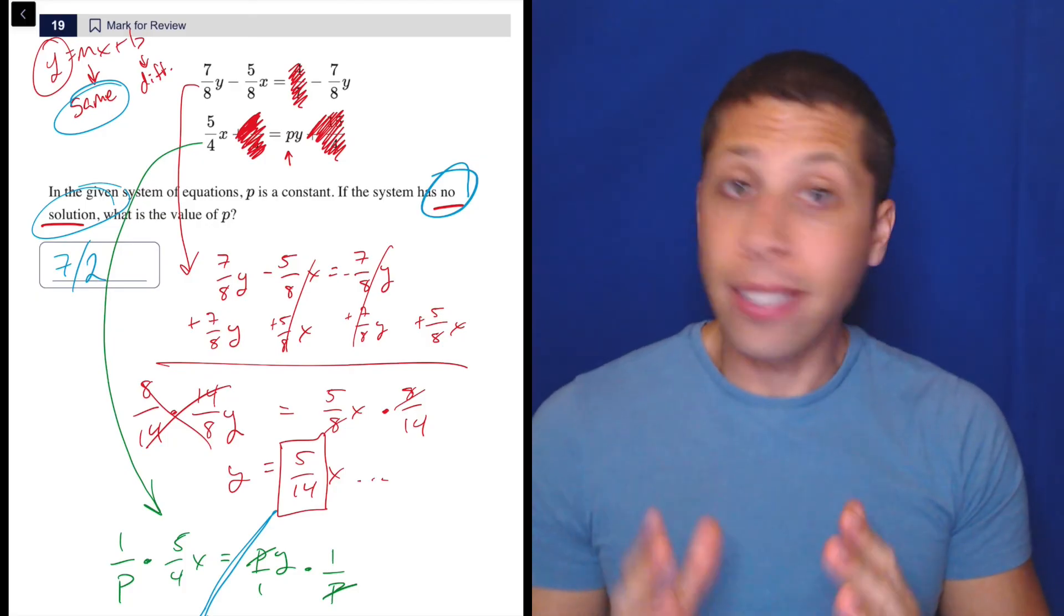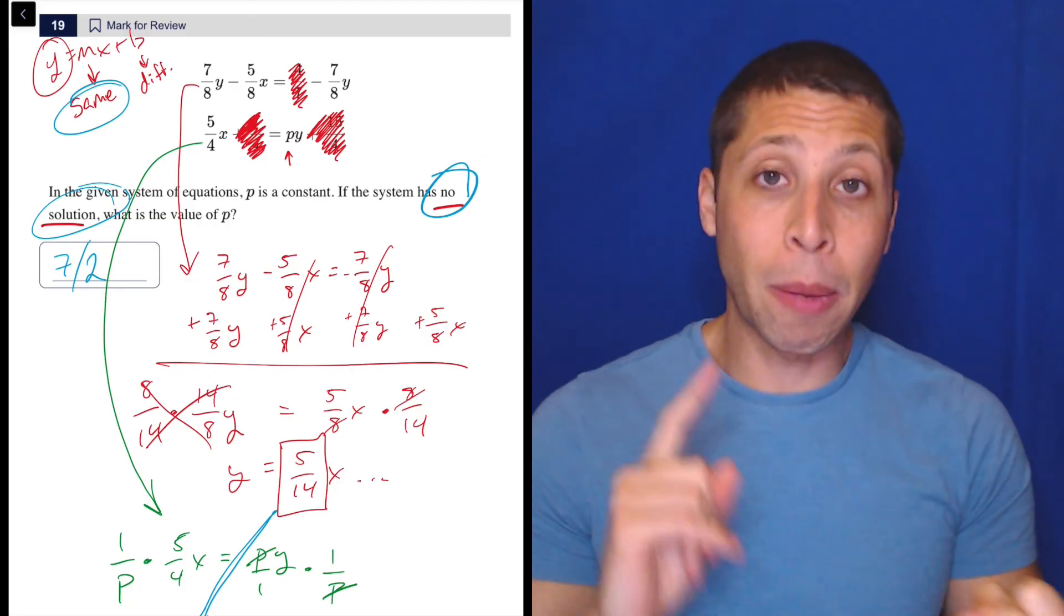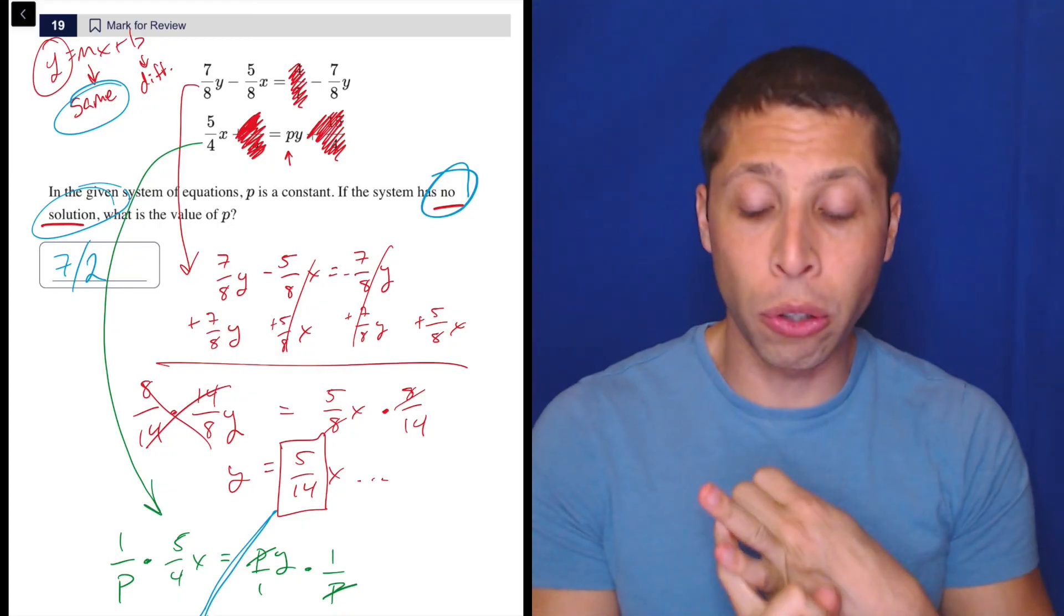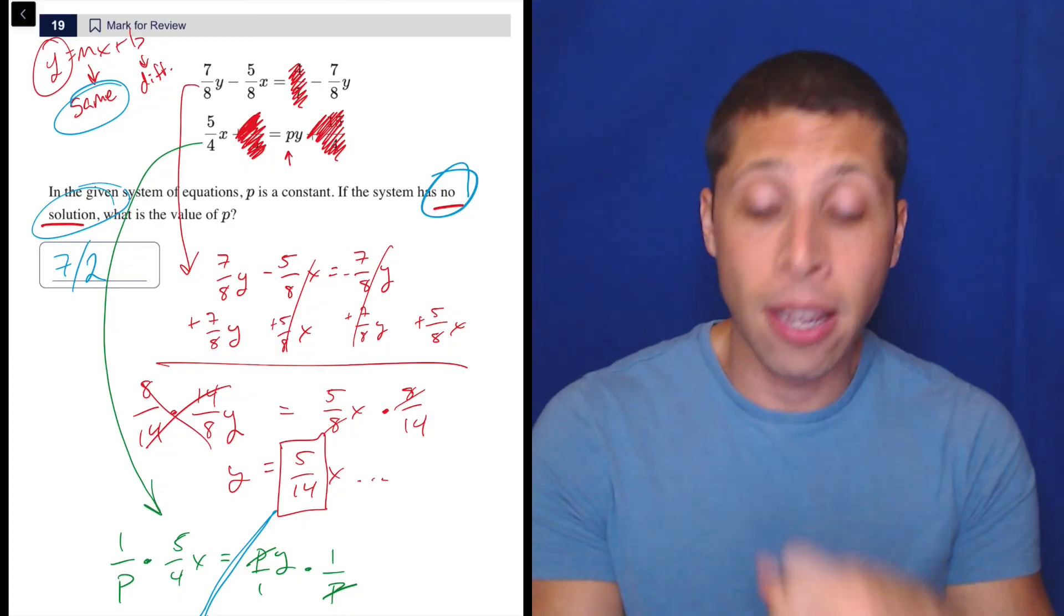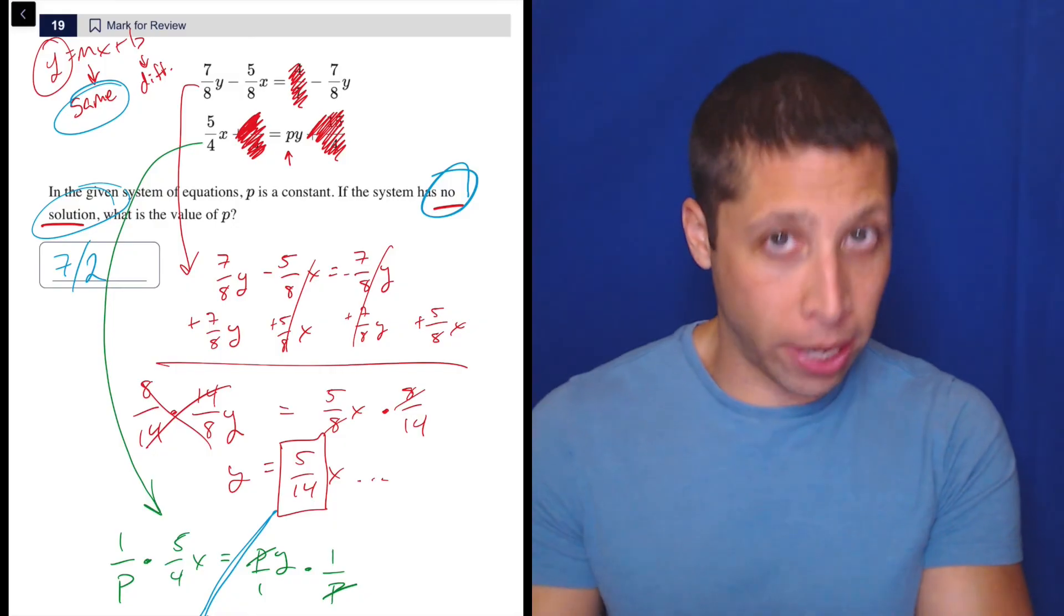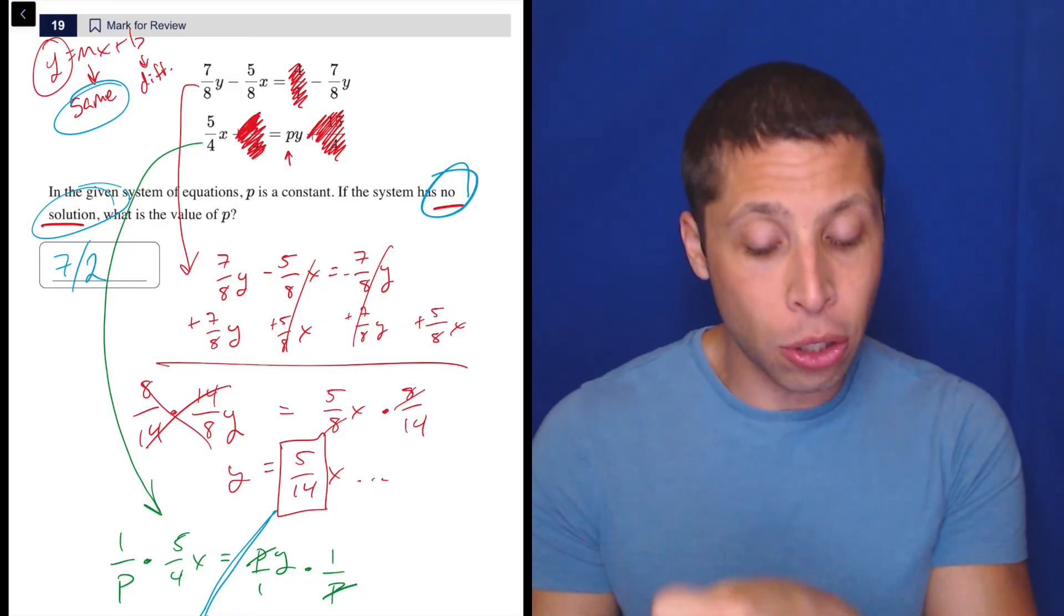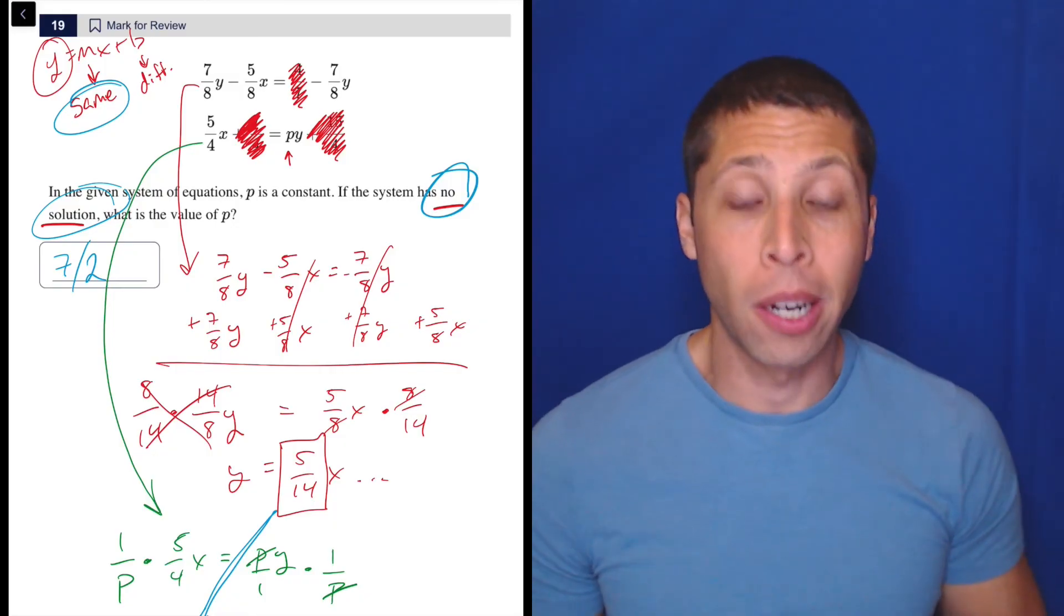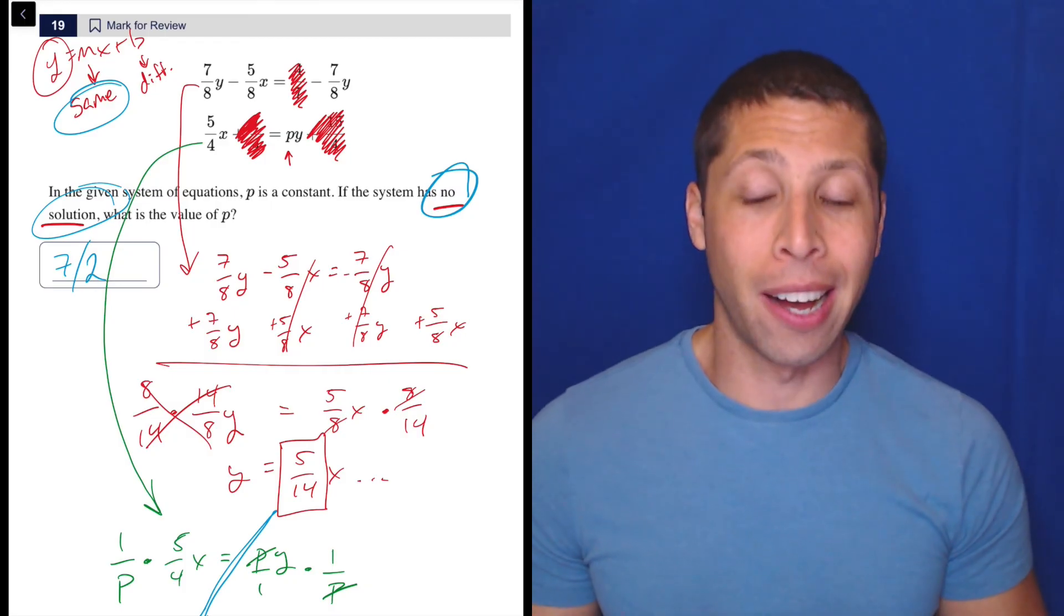So I tend to think that when we are asked about the number of solutions or we're given the number of solutions for equations that don't have an X squared that are lines, Desmos is probably not the best way to go. We could do it if we really needed to. But I think that these are cases where algebra is going to be safer.